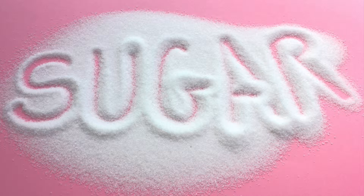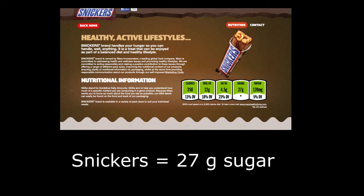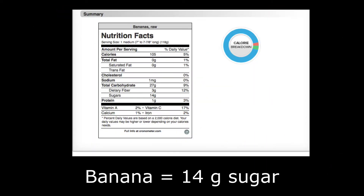We need to talk about sugar because we want to make sure that everybody understands the difference between sugar when it comes in the form of fruit — for example in a banana — and sugar when it comes in the form of added or industrial sugar, for example in a Snickers bar. Now I have a friend who was explaining to me that there's as much sugar in a banana as there is in a Snickers bar, and his point was that it's just as bad to eat a banana as a Snickers bar — which, if you're a sane person, you know that's not actually true.